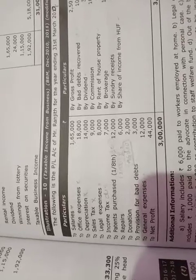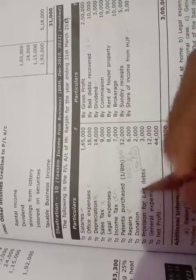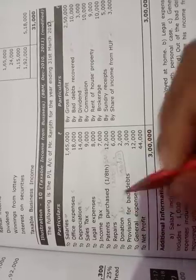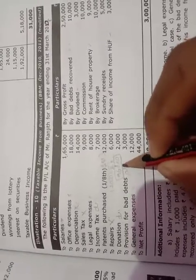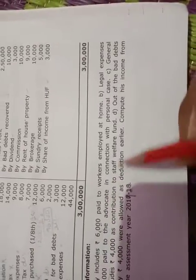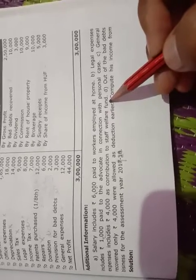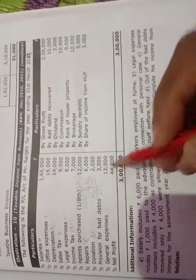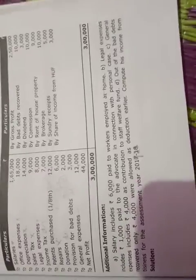Repairs is allowable — there is no adjustment for repairs, so it is entirely allowable. Next, donation of 2,000 — we consider it as disallowable. Provision for bad debts is common in business, so it is allowable — no need to take. General expenses has an adjustment: it includes 4,000 as contribution to staff welfare fund, which is entirely disallowable. Out of 12,000, 4,000 is disallowed.